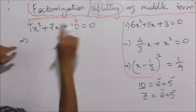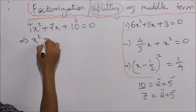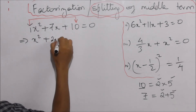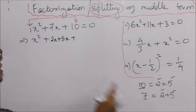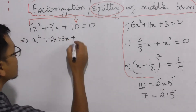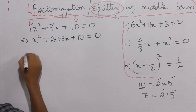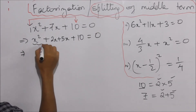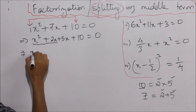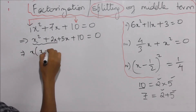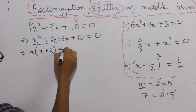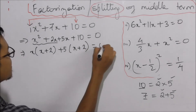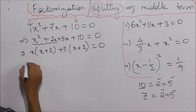So this is equal to x² plus 7x, which is 2x plus 5x — 2 plus 5 — plus 10 is equal to zero. Now you can take common factors: x into (x plus 2) plus 5 into (x plus 2) is equal to zero.